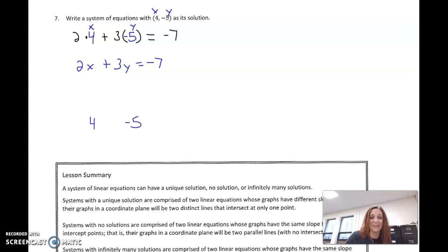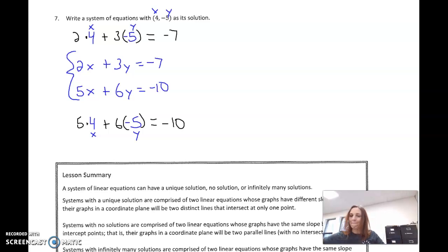And then do that again down here. But this time, pick different things. 5 times 4 plus 6 times negative 5. What does that equal? Calculator. 5 times 4 plus 6 times negative 5. It's negative 10. So then this is x. This is y. Write it as 5 times x plus 6 times y equals negative 10. Here is your system. So start with your answers and work backwards.